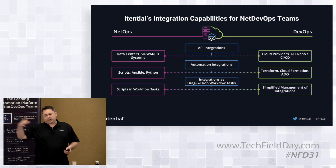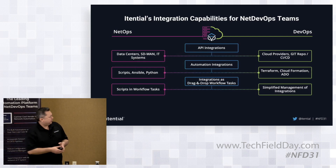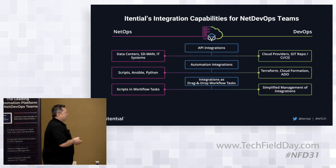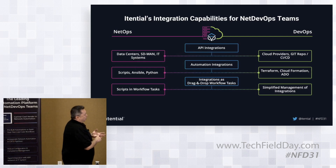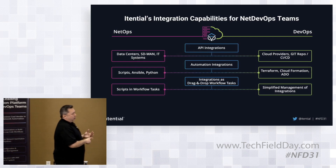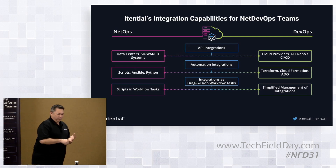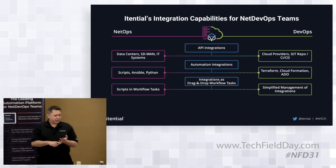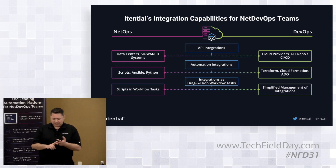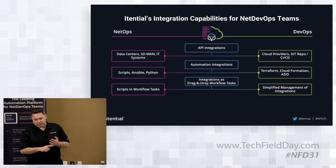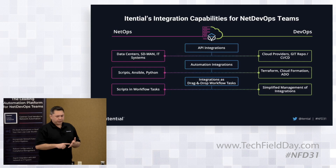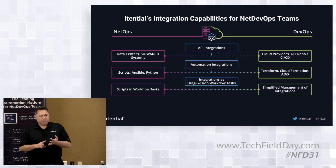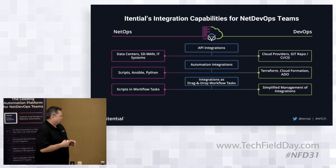API integration also covers the cloud side of it for the DevOps teams — how do we automate with all of these cloud platforms that have very robust APIs available to them, as well as the tooling they're using: GitHub, GitLab, and all kinds of other CI/CT tooling.